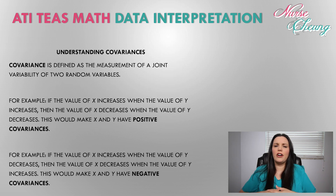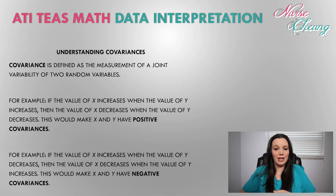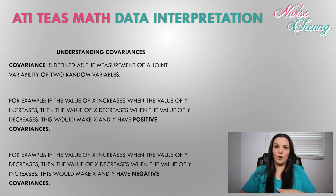Just like variances, covariances are almost the same, except covariances are defined as a measurement of the joint variability of two random variables. For example, if the value of x increases and the value of y increases, or if x decreases and y decreases, then x and y have positive covariance. However, if the value of x increases and the value of y decreases, or x decreases and y increases, then x and y have negative covariance.